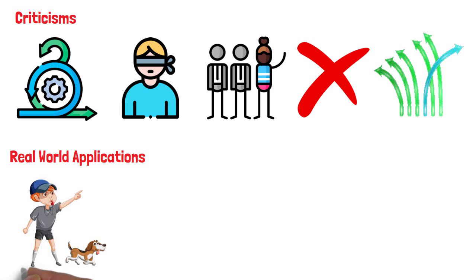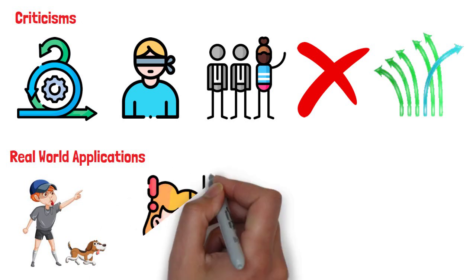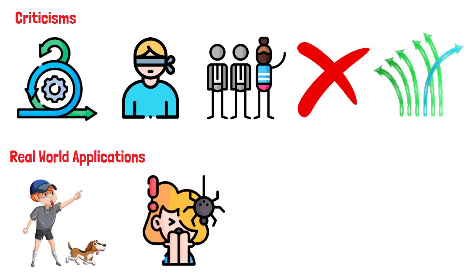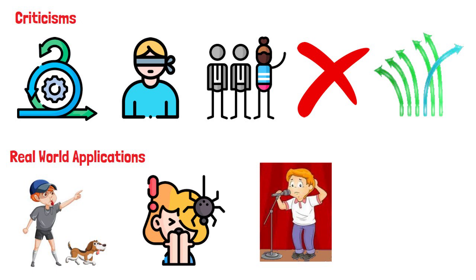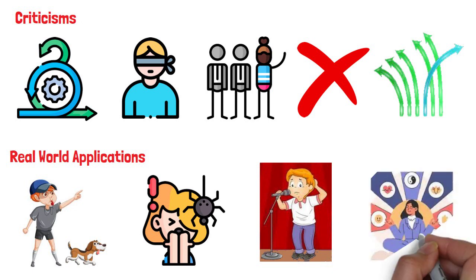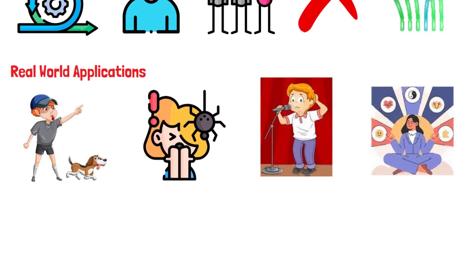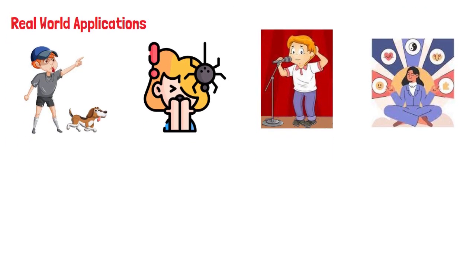For example, many dog trainers use classical conditioning techniques to help people train their pets. These techniques are also useful for helping people cope with phobias or anxiety problems. Teachers can apply classical conditioning in the class by creating a positive classroom environment to help students overcome anxiety or fear.